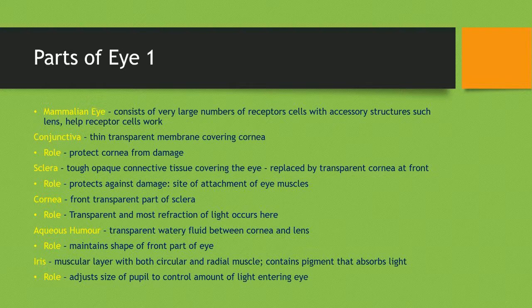The cornea is the front transparent part of the sclera and its role is to be transparent, which means that most refraction of light occurs here as light passes through.